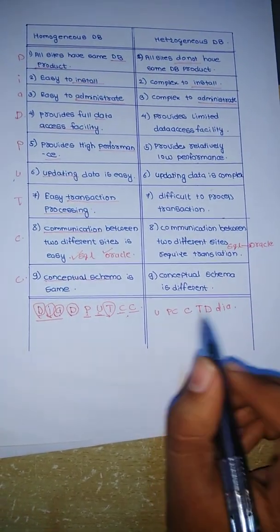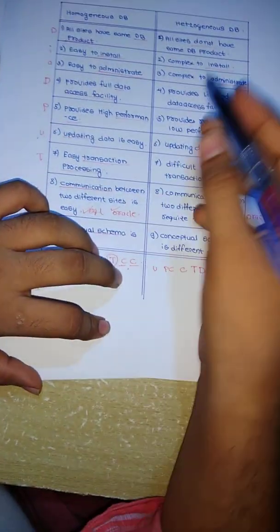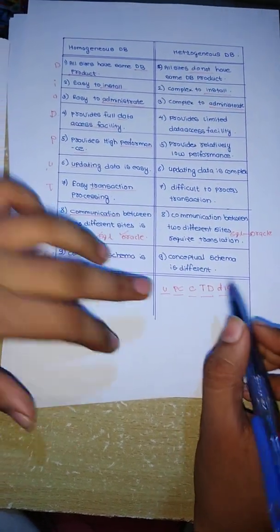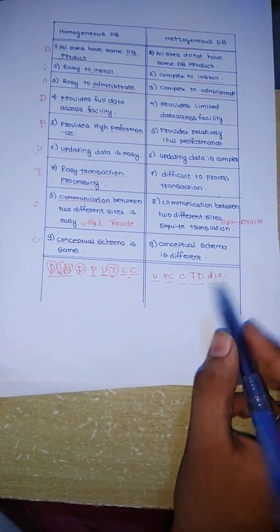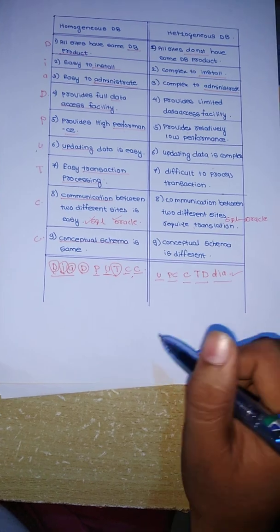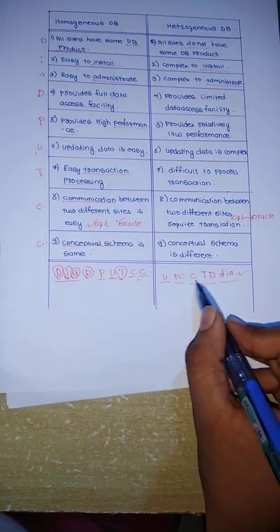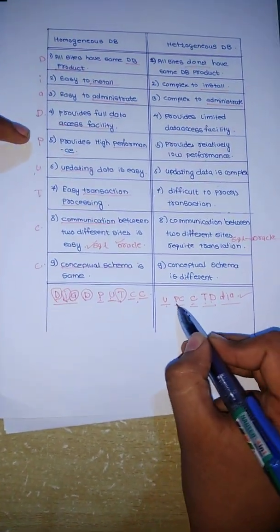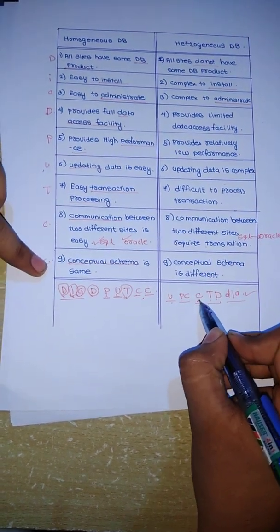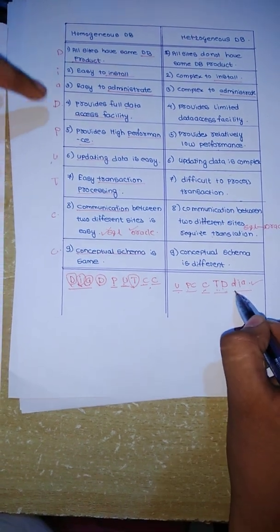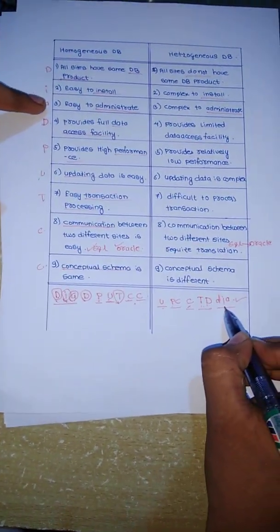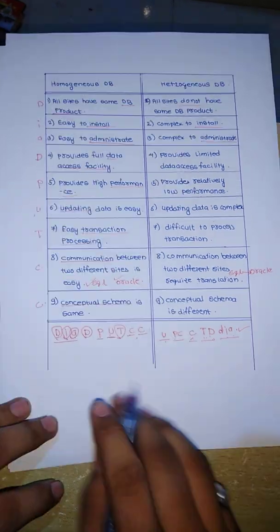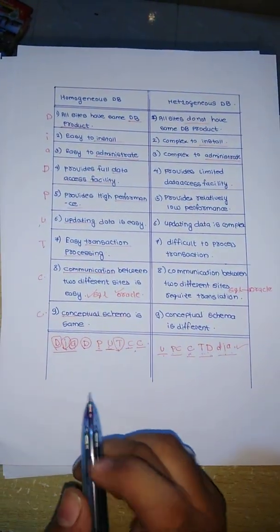Now the sentence formed from these keywords — this is just for remembering all the points — is: 'Your PC contains time division diagram.' If you remember this sentence, the whole difference will be available in your mind. Just remember: your PC contains time division diagram, and the difference between homogeneous and heterogeneous databases will be by heart to you.